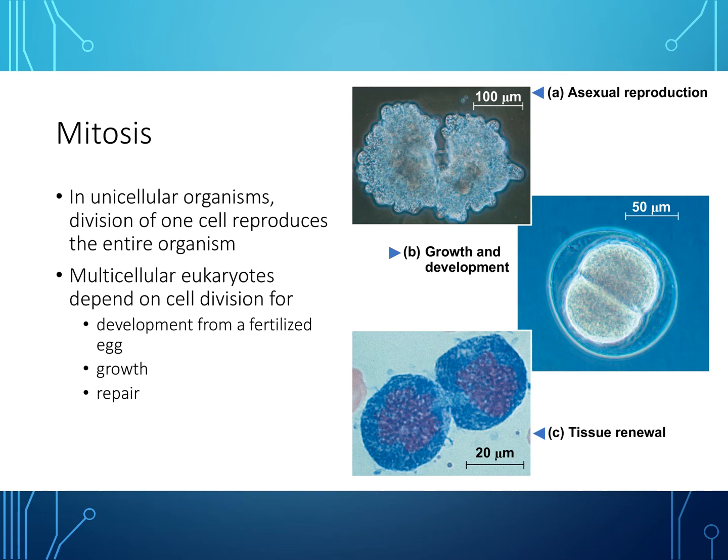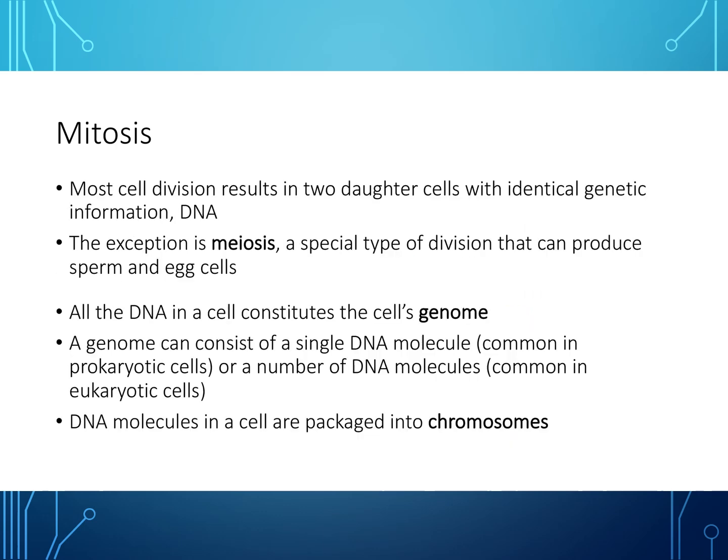Mitosis is used for asexual reproduction, growth and development, and tissue renewal. In unicellular organisms, division of one cell reproduces the entire organism. In multicellular eukaryotes, cell division is required for development from a fertilized egg, growth, and repair. Most cell division results in two daughter cells with identical genetic information. The exception is meiosis, which will be covered in the next video, and which produces a special type of division that can produce sperm and egg cells.